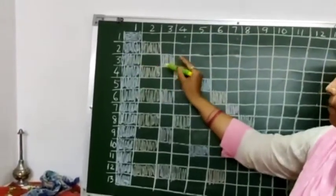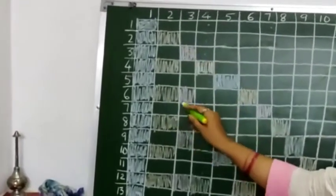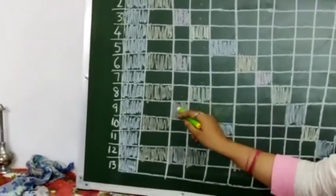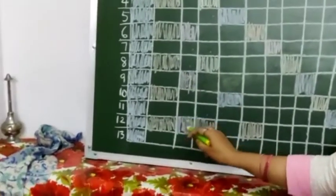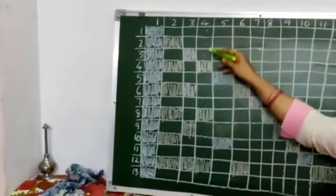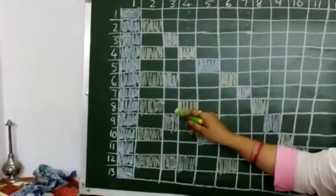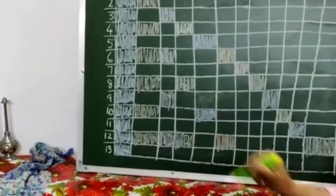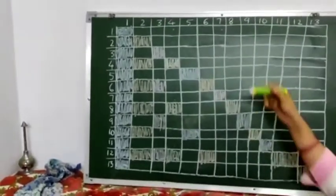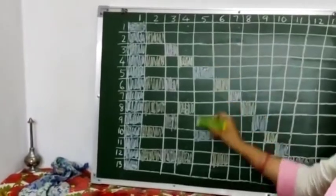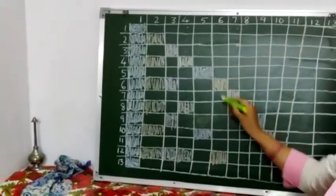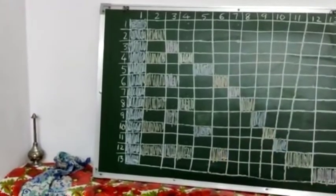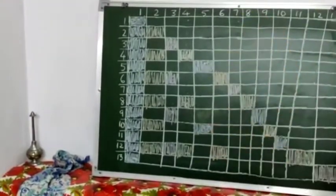Multiples of three: three, six, nine, twelve. These are the multiples of three. Four's multiples: four, eight, twelve. Multiples of five: five and ten. Multiples of six: six and twelve. So here you are getting the multiples.